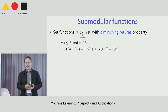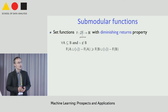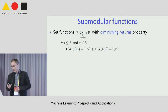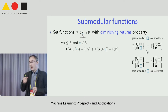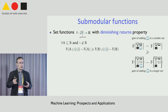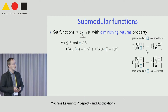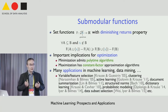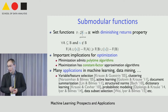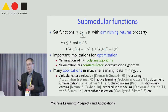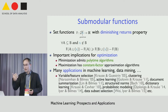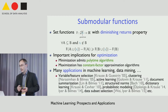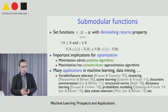Since this is the submodularity session, I'll keep background brief. The setting involves set functions mapping subsets of a finite set V to the reals, characterized by diminishing returns: the gain from adding an element is larger in the context of a small set than a superset. Submodularity has important implications for optimization—not just minimization, but also maximization. Exact maximization is hard, but there are good approximation algorithms.